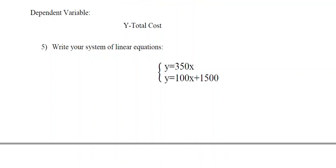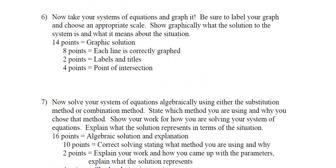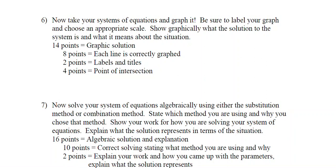You also want to solve your system algebraically — this is 16 out of 50 points, which is 32 percent of the total. You want to show how you find the x, y ordered pair they have in common so you can determine what number of nights would result in the same cost. Using either the substitution method or the elimination method, you'll show how to find the x, y point of intersection — one way with a graph and one way algebraically.